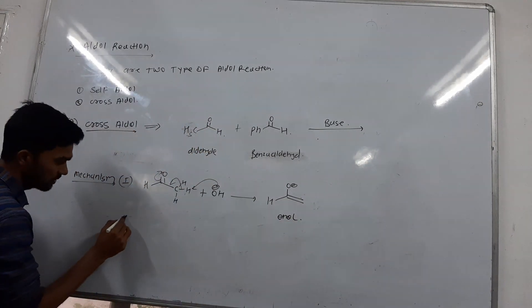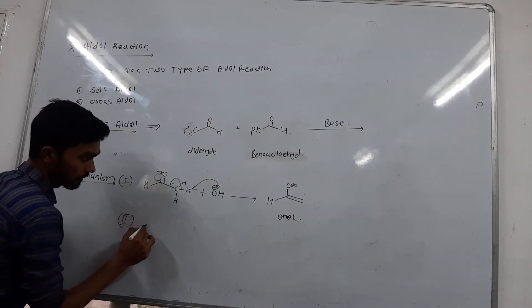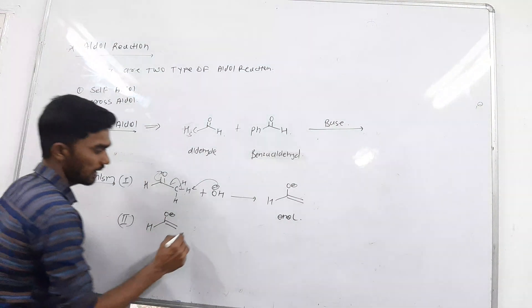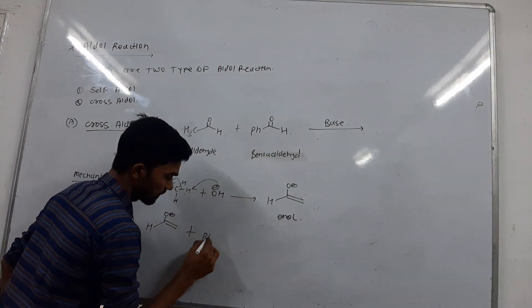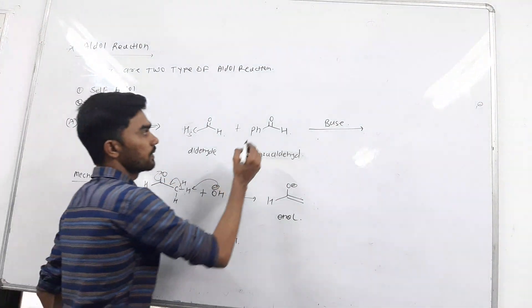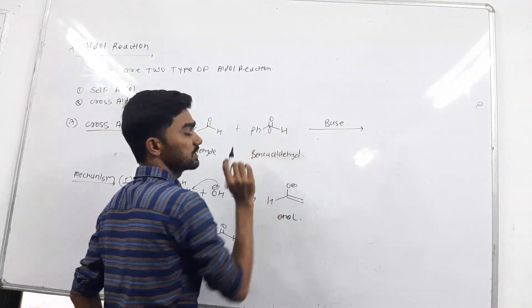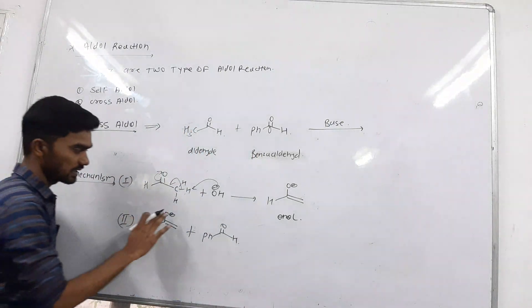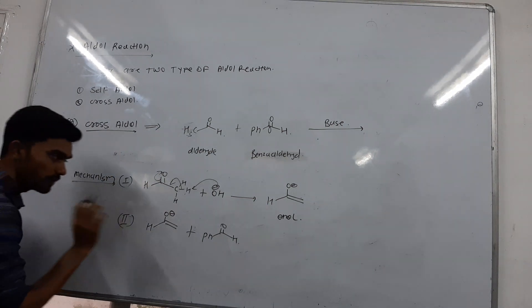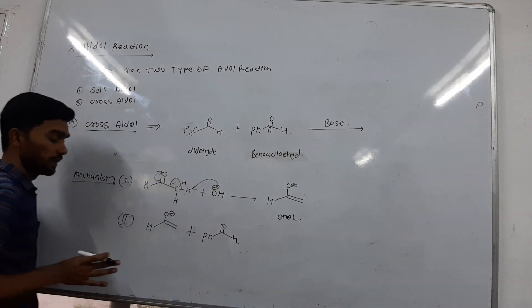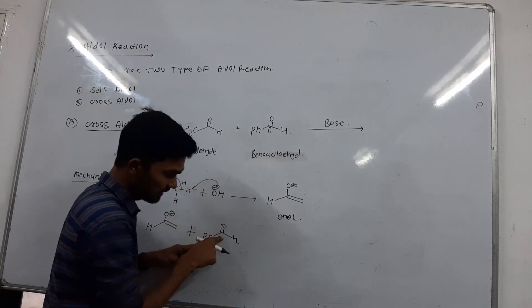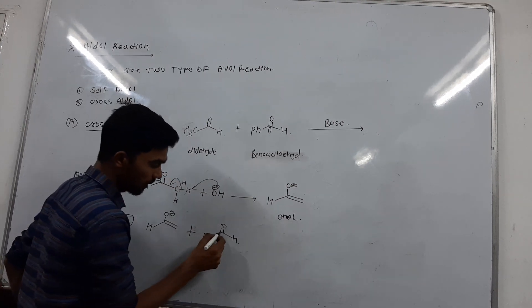The second step is: this enolate is attacked by the benzaldehyde electrophilic center. The benzaldehyde carbonyl is the electrophilic center because the pi orbital is empty. The enolate is a soft nucleophile and the benzaldehyde carbonyl is a hard electrophile. The nucleophile attacks the electrophilic center.